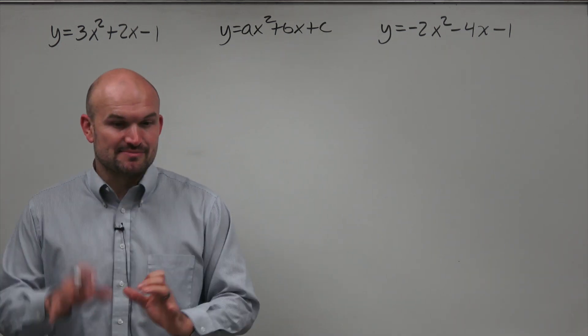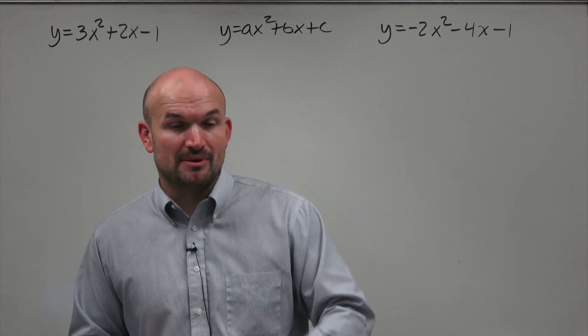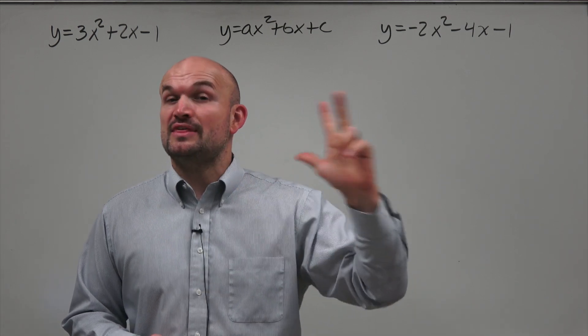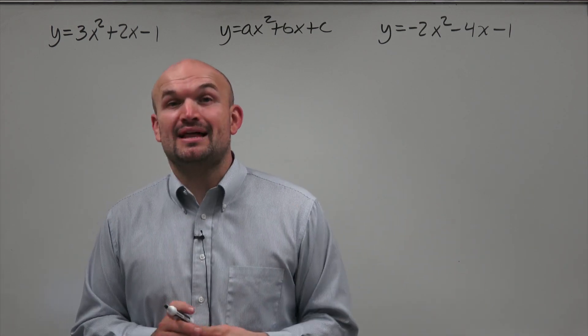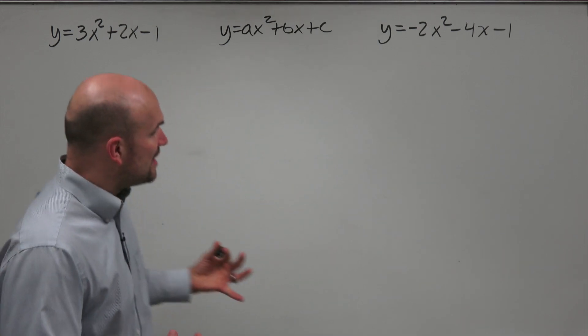So it's very important when you're dealing with trying to identify the parts of a quadratic that you have it in standard form — Y equals AX squared plus BX plus C, where A, B, and C are going to equal to 0. We're going to investigate the opening of the parabola, the axis of symmetry, the vertex, and the X and Y-intercepts.